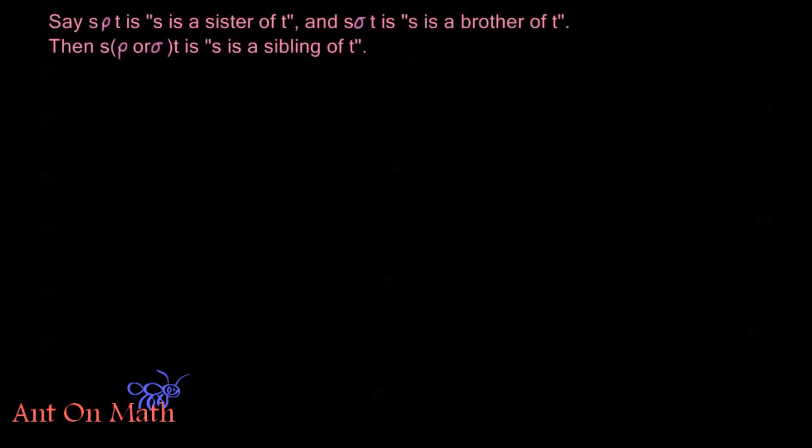So let's say that s ρ t is the relation that s is a sister of t, and s σ t is the relation that s is a brother of t. Then s ρ or σ t would be the relation s is a sibling of t. This means that either ρ or σ is satisfied by s and t.